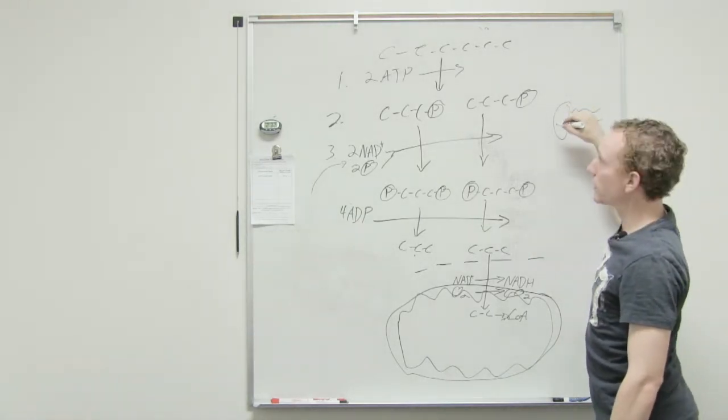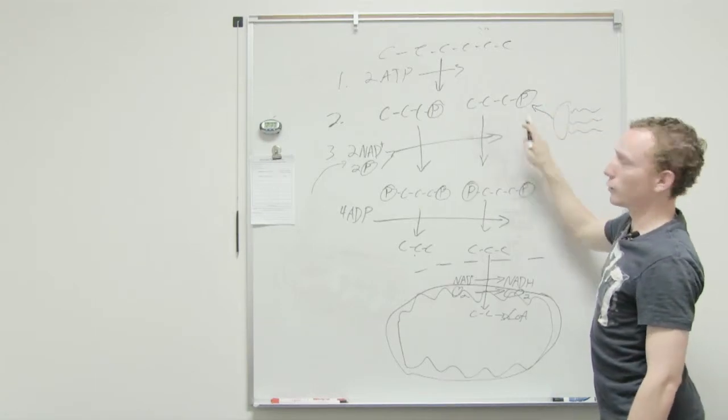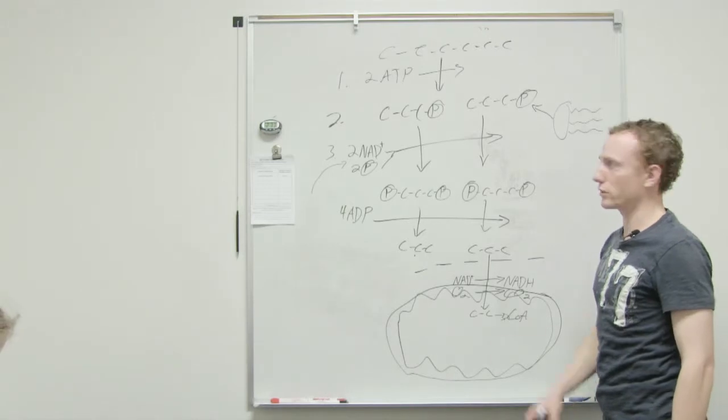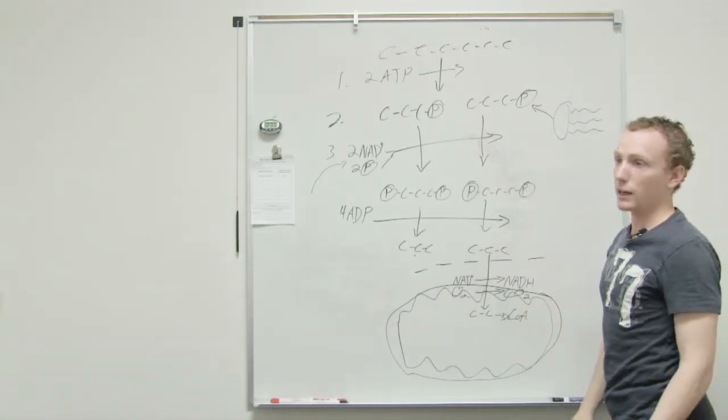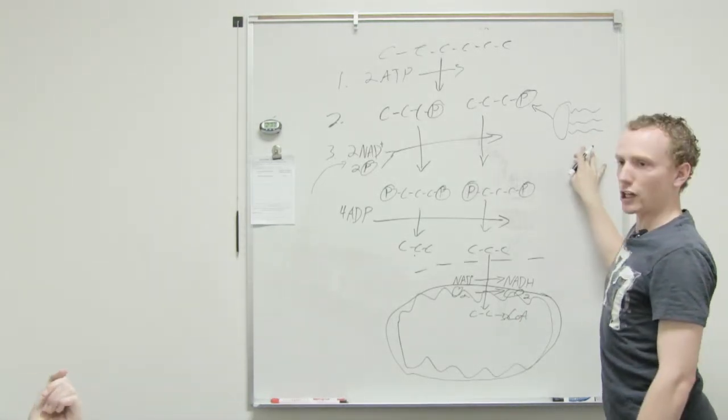Glycerol, when it's broken down, it enters in right here, the three carbons with the phosphate. But there's only one glycerol. So you don't get very much energy that way. The main way you're going to get energy is these fatty acid chains, because these chains are really long. This is a very unproportional picture.